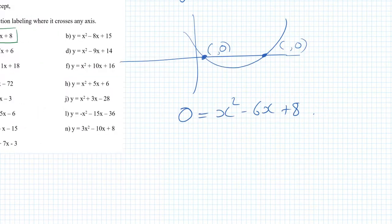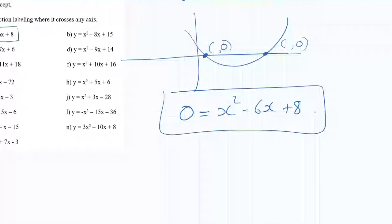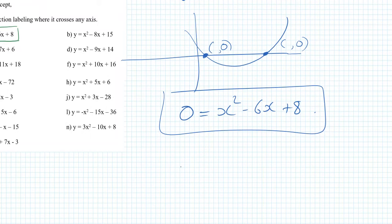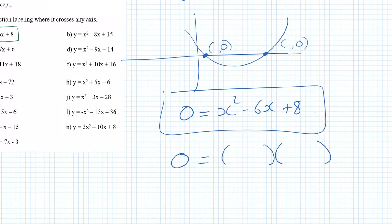This is going to be the same thing as solving this equation, zero equals x squared minus 6x plus 8. I can do this with the quadratic formula, but it's probably easier for me just to factorize it because I can see I've got two numbers that multiply to make an 8 and add to make a minus 6.